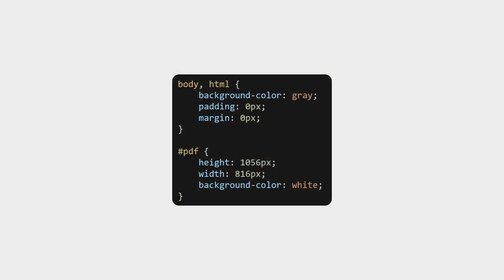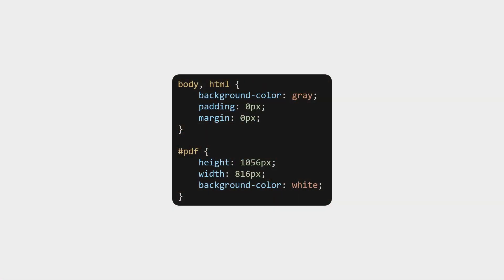Next we want to style this with CSS to determine exactly what the size of the document should be. We should also make the body background gray or some other color so it's clear where the PDF is. Puppeteer exports PDFs at a default resolution of 96 PPI, so to match a standard letter size we use 8.5 × 11 multiplied by 96, which gives us 816 pixels wide and 1056 pixels high. We also want to make sure the body padding and margin are zero.